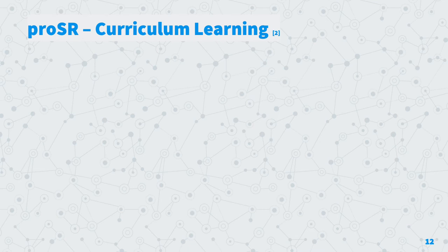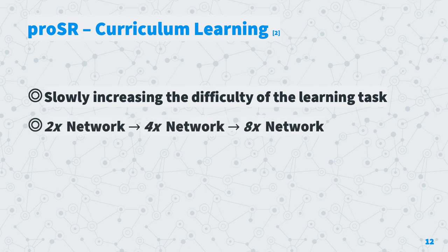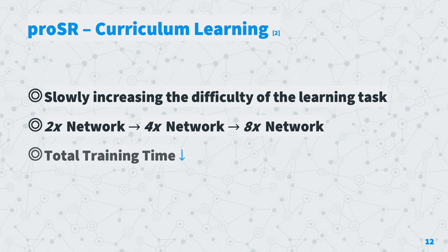Additionally to the progressive architecture, ProSR — the progressive super resolution model — uses curriculum learning. Training is done by slowly raising the difficulty of the learning task. First, the 2x section of the pyramidal architecture is trained, then subsequent portions (4x and 8x) are attached to the network. This ensures training difficulty is gradually increased. Compared to simple multiscale training, total training time greatly decreases and performance increases. There is also a GAN-enhanced ProSR model, but this white paper will not cover it.